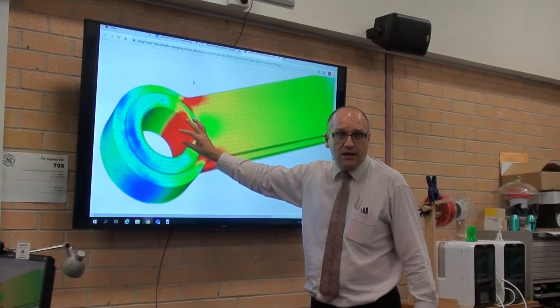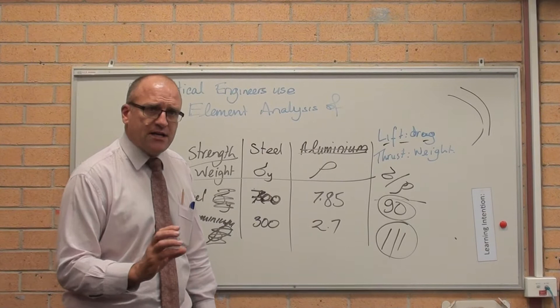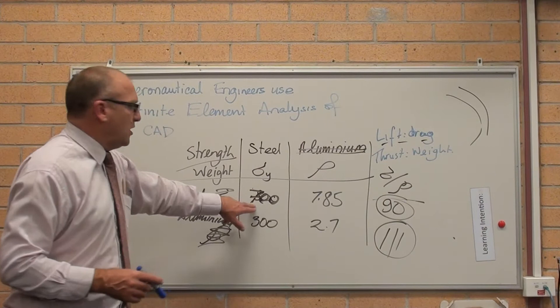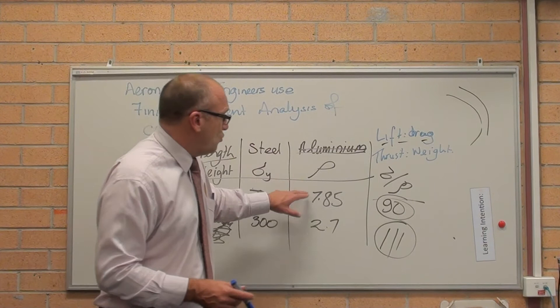So that's the first thing. The second thing is the textbooks often talk about strength to weight ratio. That's not strictly correct. Good steel has a yield strength of about 700 megapascals quite happily and easily. Its density is 7.85 tonnes per cubic metre. Its strength to weight ratio is about 90.